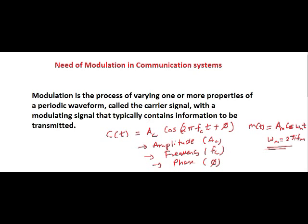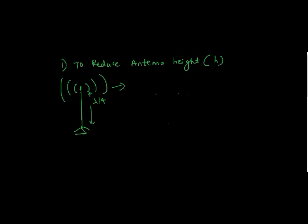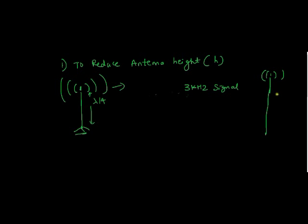In this video, we will see why we need to use modulation technique in communication systems. As we all know, antenna plays a major role in communication systems. Whether it may be a transmitter or receiver, it incorporates an antenna. We need to consider the dimensions of antenna before proceeding further. If we want to transmit a signal, say 3 kHz, and if we want to transmit it over an antenna, the minimum height of the antenna should be equal to λ/4.